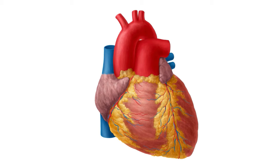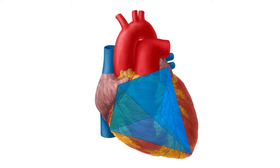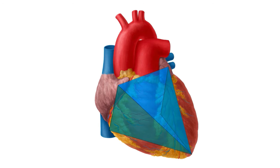The heart has five surfaces, and to understand how they are oriented, you need to think of the heart as being positioned like an overturned pyramid. This will help you remember that the base of the heart is actually its posterior surface. The diaphragmatic surface is the inferior surface, which faces the respiratory diaphragm underneath the heart. The part facing the sternum and the ribs is known as the anterior surface. And finally, we have left and right pulmonary surfaces facing the lungs.